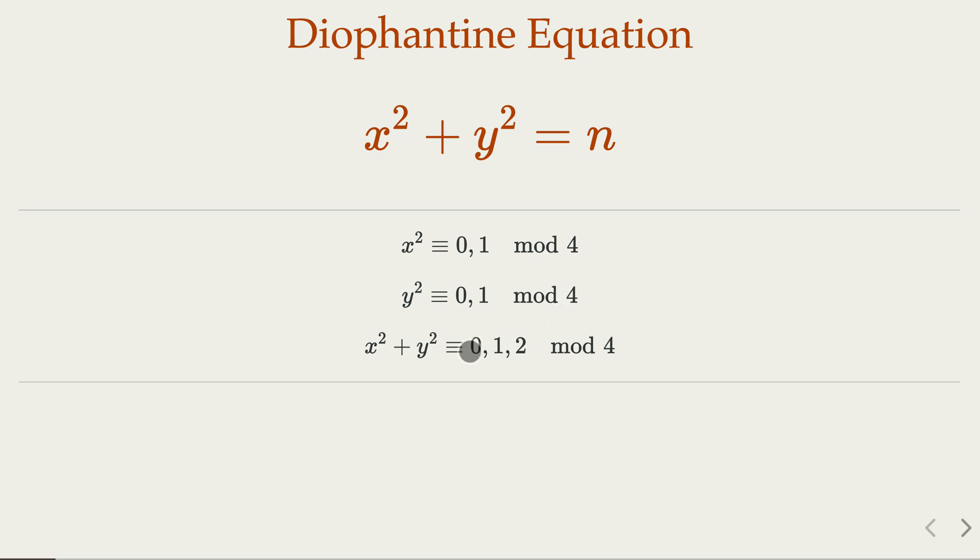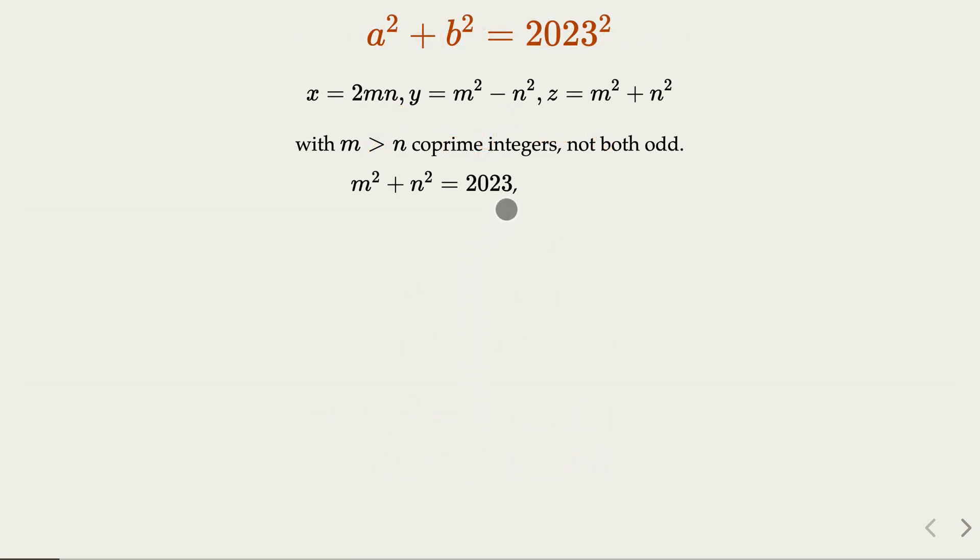Now in our case 2023 is actually 3 mod 4, which means this equation would not have any solutions. So that is we cannot find a primitive Pythagorean triple that has 2023 as the length of hypotenuse.